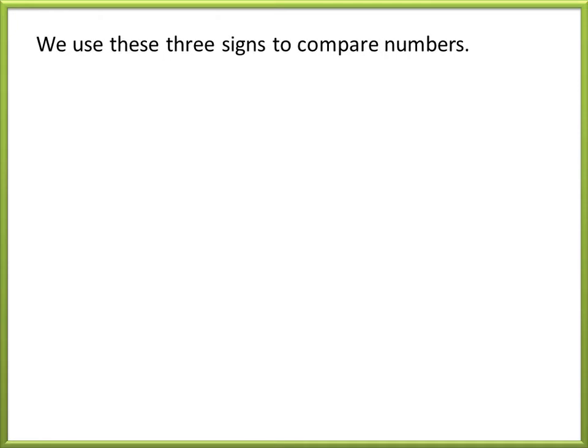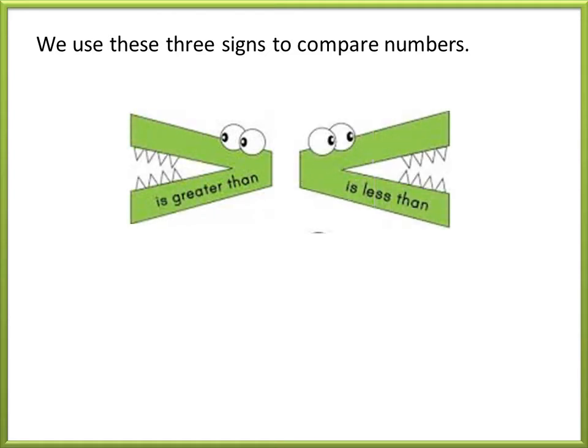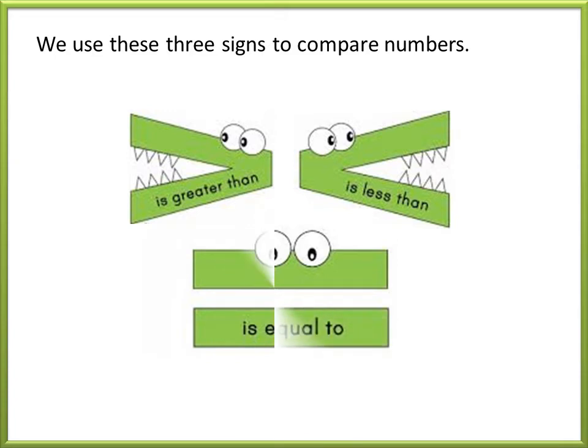We use these three signs to compare numbers: is greater than, is less than, is equal to.